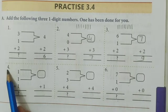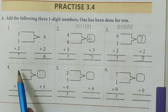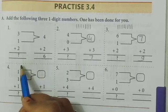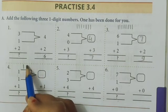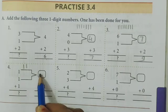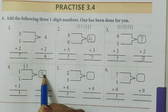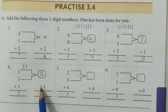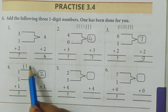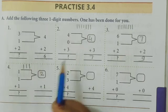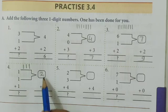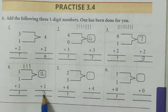Next: 1+1+1. First add 1+1=2. Write 2 in the box. Then 2+1: draw 2 lines and add 1 more line — count 1, 2, 3. Answer is 3.